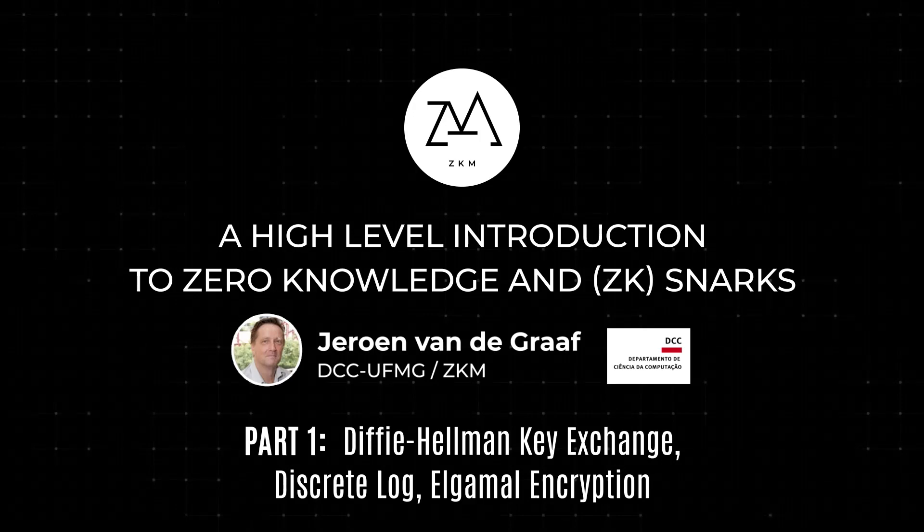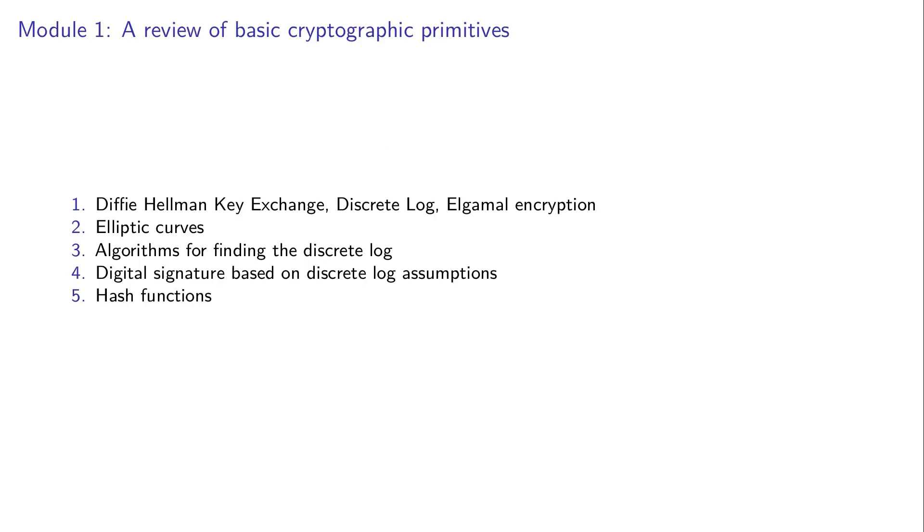Welcome to this review of basic cryptographic primitives, which is the first module of our course on zero knowledge. In this module, I will talk shortly about the Diffie-Hellman key exchange protocol, the discrete log problem, and ElGamal encryption. The reason I do this is because it provides a gentle introduction into arithmetic modulo a prime number. I'll also talk a bit about elliptic curves, algorithms for finding discrete logarithm, digital signatures based on discrete log, and hash functions.